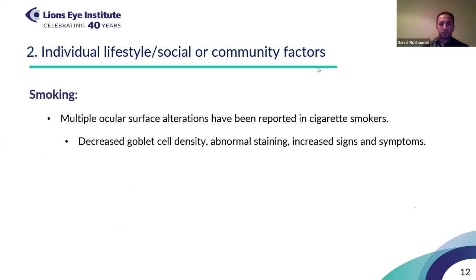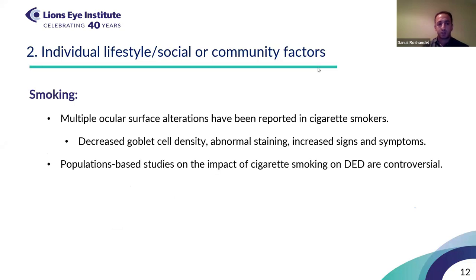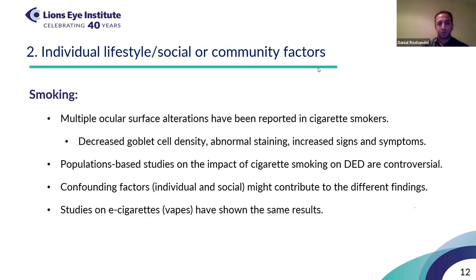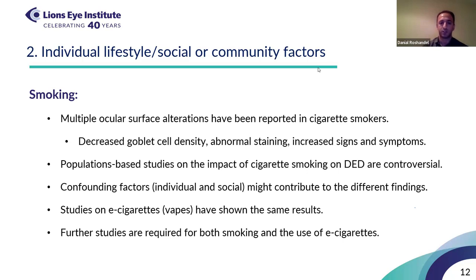Smoking cigarettes was associated with multiple ocular surface alterations like reduced goblet cell density, abnormal corneal staining, and increased ocular surface signs and symptoms. However, population-based studies have not shown any significant association between cigarette smoking and dry eye disease. Studies on e-cigarettes have shown the same — ocular surface alterations but without any significant correlation with dry eye disease or other ocular surface diseases — so further studies are required to explore this relationship.